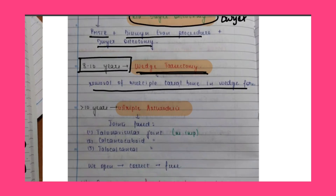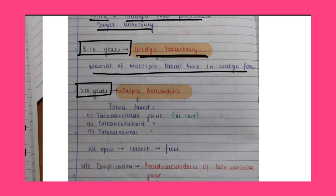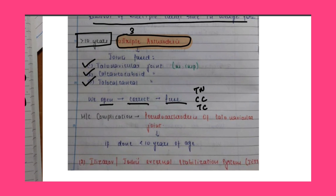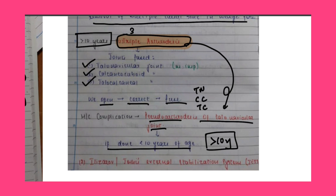If the age of presentation is greater than 10 years, the treatment is triple arthrodesis — fusion of three joints: talonavicular, calcaneocuboid, and talocalcaneal joints. The foot is opened, corrected, and fused at these three joints. The most common complication of triple arthrodesis is pseudoarthrosis of the talonavicular joint. This procedure should only be done after 10 years of age; if done before 10 years, pseudoarthrosis occurs. An alternative method for greater than 10 years is the Ilizarov external fixation system.